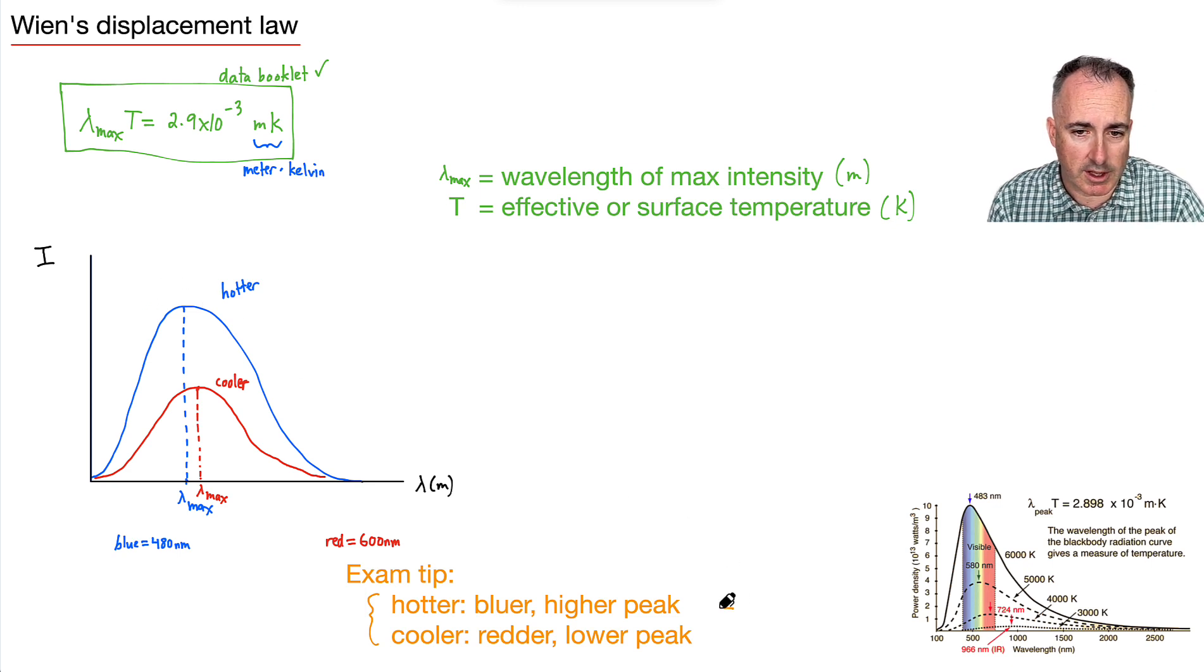So that means they're more to the left and they're higher peaks. In other words, they go left and they go up. Things that are cooler go down and to the right. So that, I think, is the key here to understanding this.